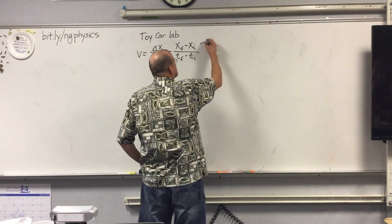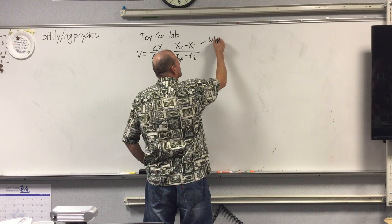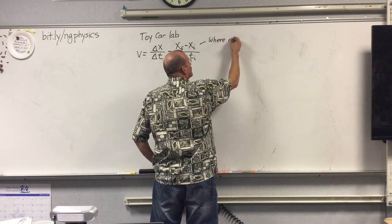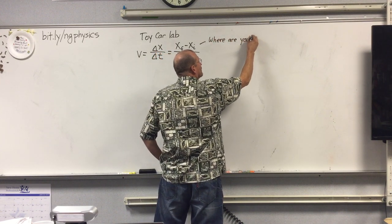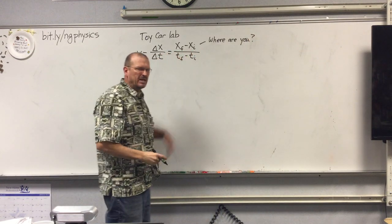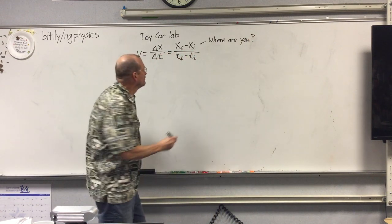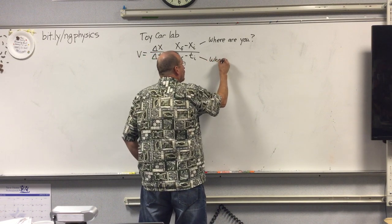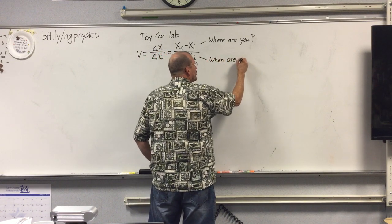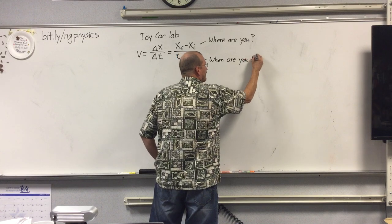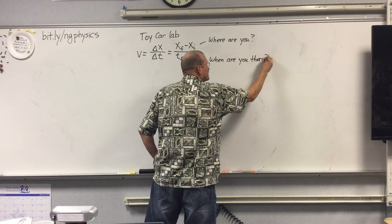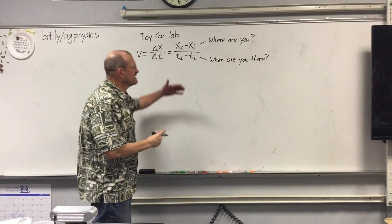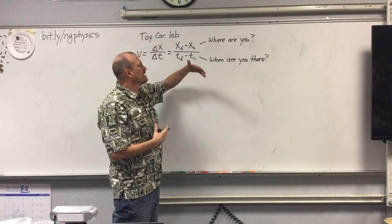What this means is we have to be able to measure and ask and answer two questions. The delta X part is where are you, because you have to have a way of pinpointing your location. And then the time thing is when are you there. So we need a timekeeping device or mechanism that will allow us to record when you are at certain positions.